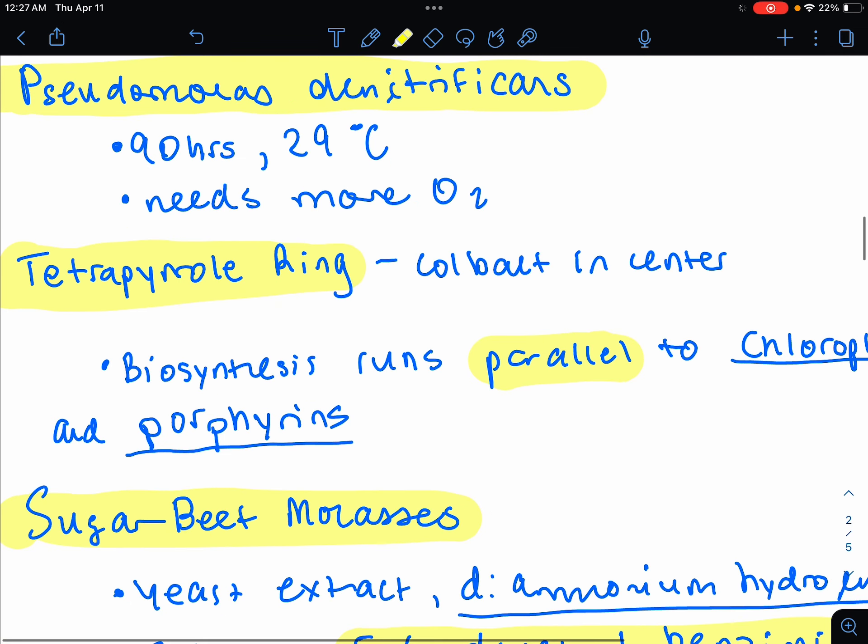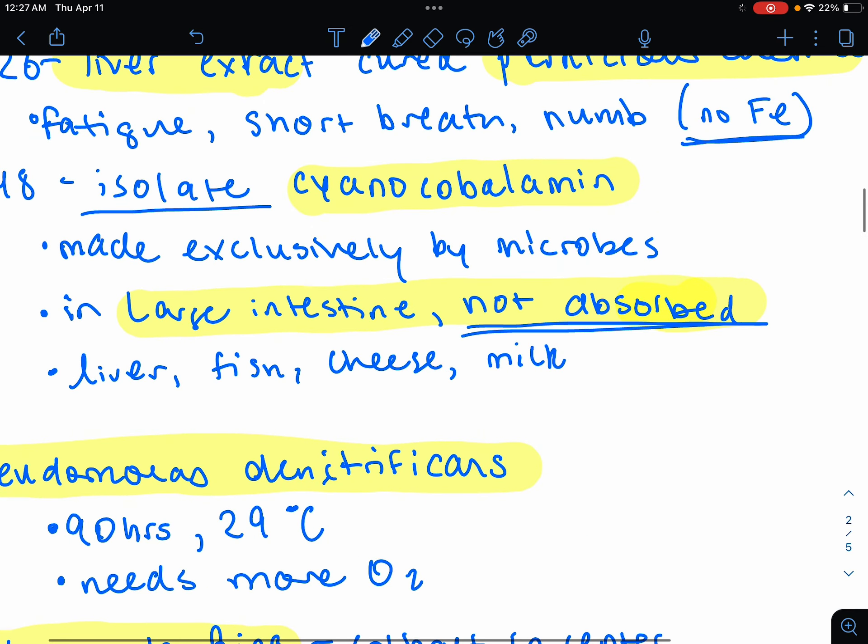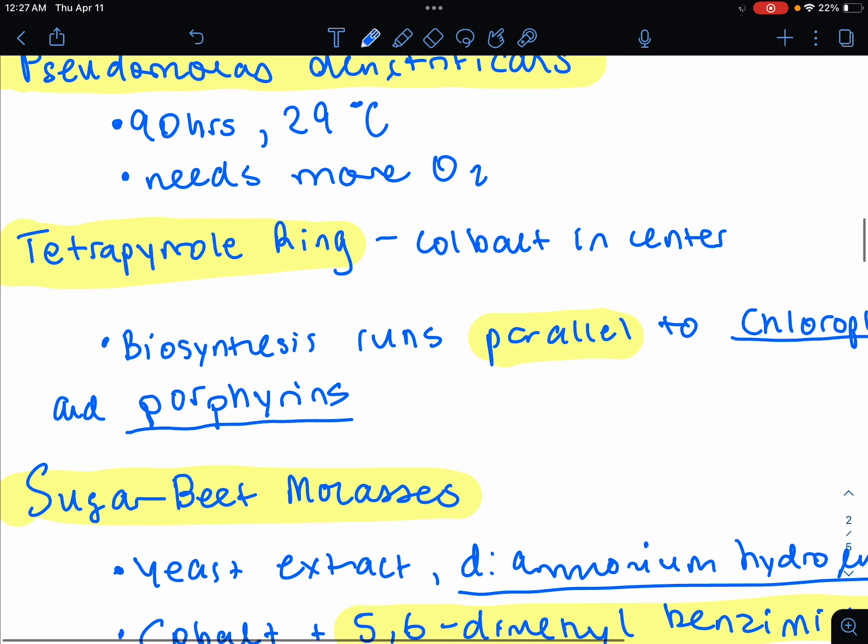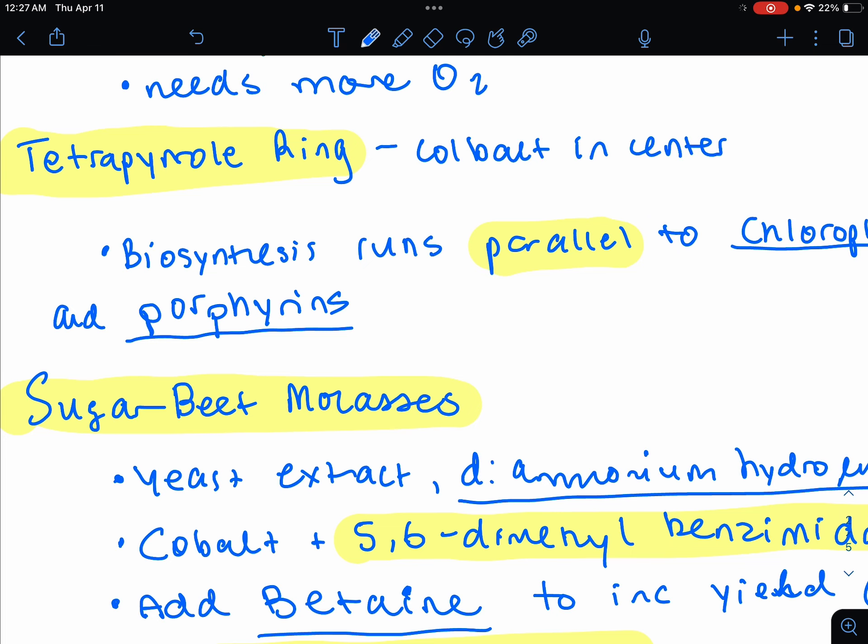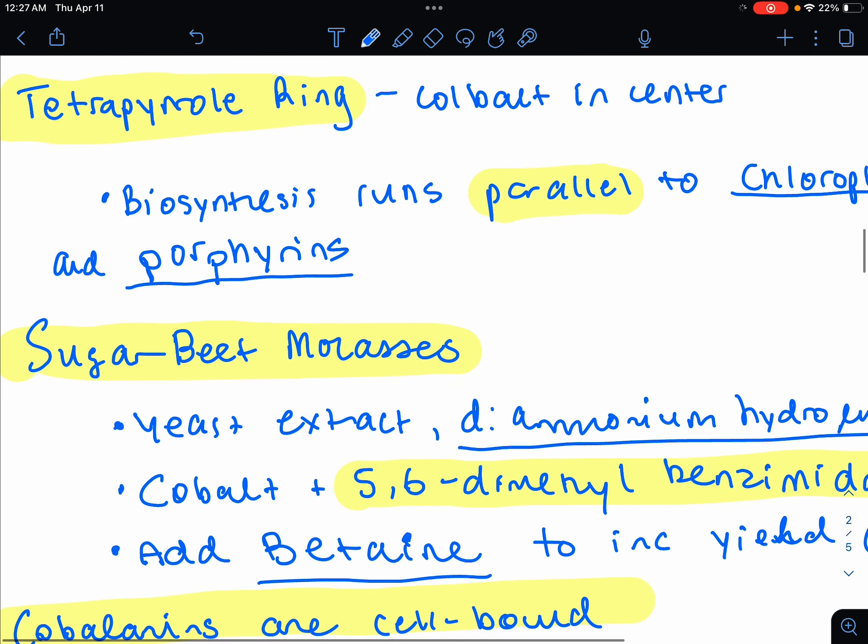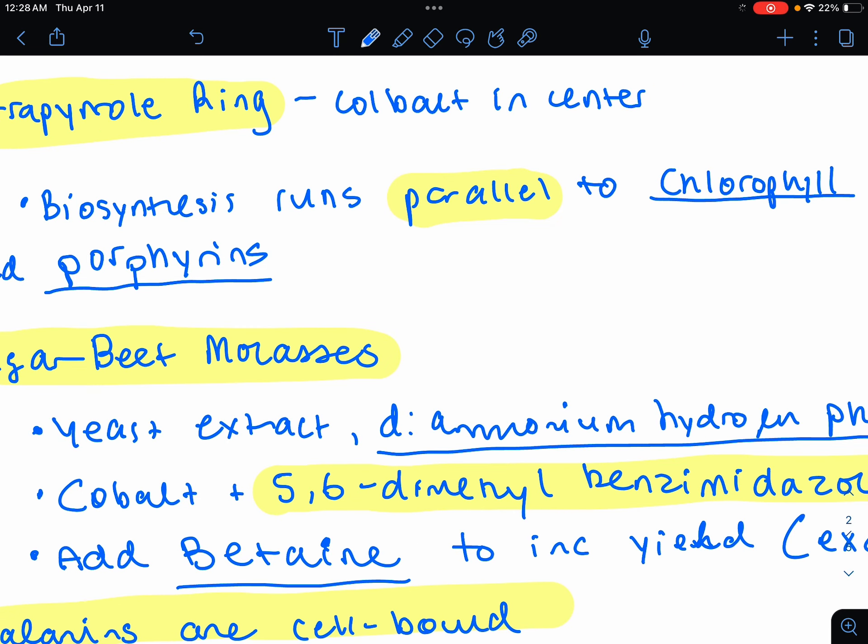The base structure of the B12 and other cobalamins will be this tetrapyrrole ring. And at the center, the name cyanocobalamin suggests this cobalt. And there is a cobalt in the center of this tetrapyrrole ring in the structure. The biosynthesis of B12 runs parallel to chlorophyll and the synthesis of porphyrins. So these are similar structures. They have different metal ions in the center, basically. So they are synthesized in parallel to B12.